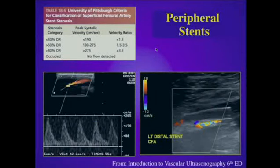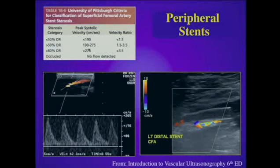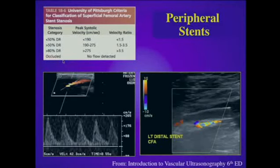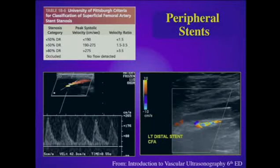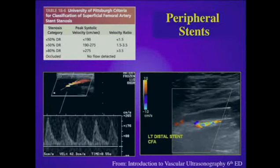There are also criteria proposed for the evaluation of peripheral stents. For a stenosis associated with a stent greater than 50 percent diameter reduction, the peak systolic velocity ranges from 190 to 275 centimeters per second with a velocity ratio between 1.5 and 3.5. For a high-grade stenosis greater than 80 percent diameter reduction, the peak systolic velocity should be greater than 275 centimeters per second with a velocity ratio greater than 3.5. In the example on the left, we see a tight stenosis in a femoral artery stent with a velocity of approximately 270 centimeters per second. On the right, an example of stent occlusion — stents are easily recognized as echogenic structures, and in this example there is no flow through the stent, which is filled with low-level internal echoes.